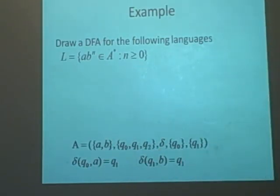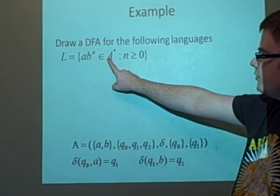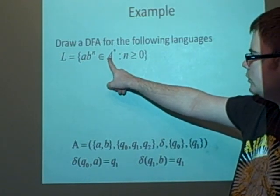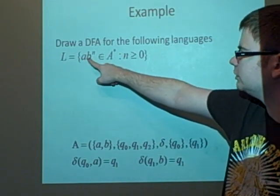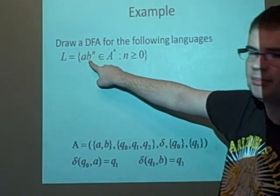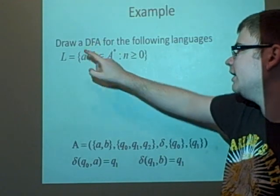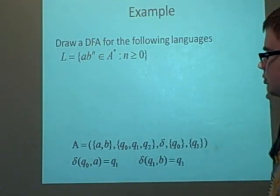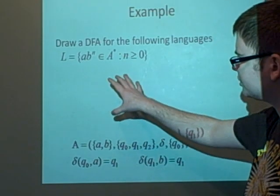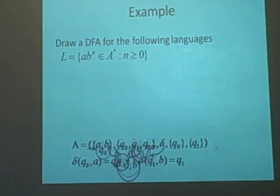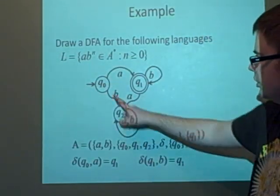We want to draw a DFA for the following language: L = {abⁿ ∈ A⁺ : n ≥ 0}. So the language has a followed by b to the power n, where n is non-negative. First, we want to have an initial state, which we denote as q₀.